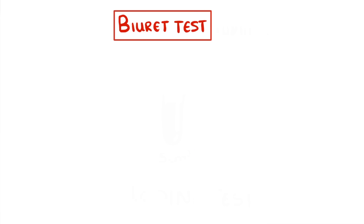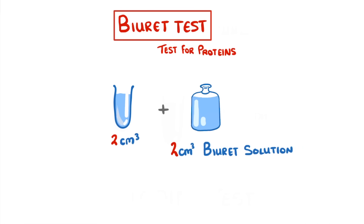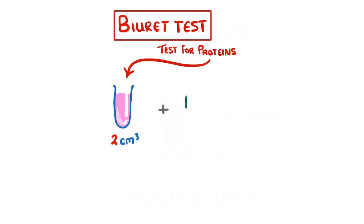The biuret test is a test for proteins. Add two centimeters cubed of your sample to a test tube, then add another two centimeters cubed of biuret solution, turning it blue, before gently shaking it. If the food sample contains protein the solution will change from blue to pink or purple. If you're doing the Edexcel course, instead of just adding biuret reagent, add potassium hydroxide followed by copper sulfate.